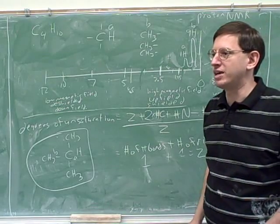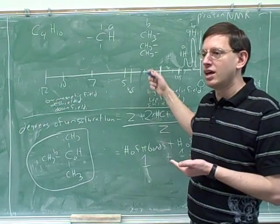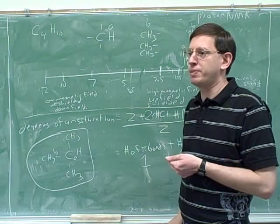So now we've gone through three of the four types of information: the number of peaks, the amount of chemical shift, the integration, and the fourth type of information is the splitting.